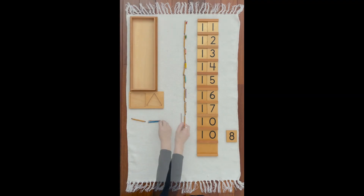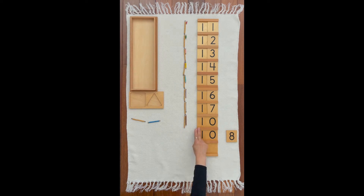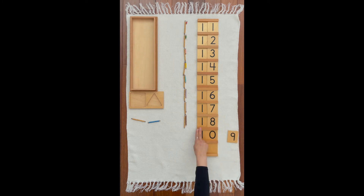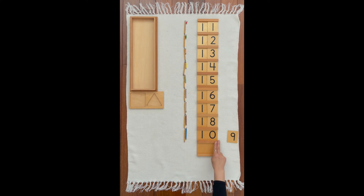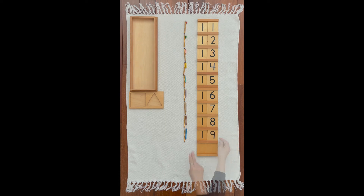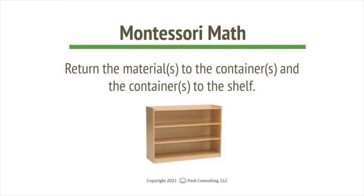One ten, eight is eighteen. This is how we write eighteen. One ten, nine is nineteen. This is how we write nineteen.